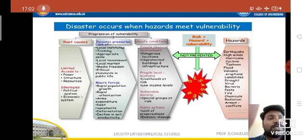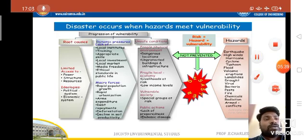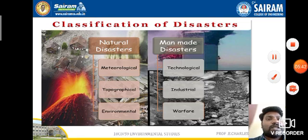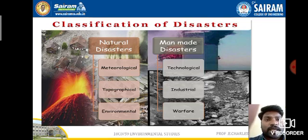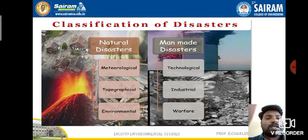Risk is equal to hazard plus vulnerability. We have to try to prevent the progression of vulnerability and stop it from converting into hazards. Coming to the classification of disasters, they can be classified into two types: natural disasters — meteorological, topographical, and environmental — and man-made disasters — technological, industrial, and warfare.